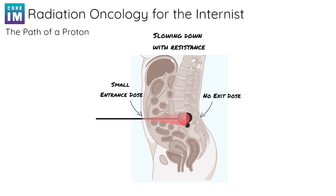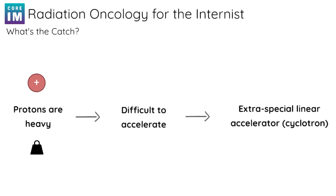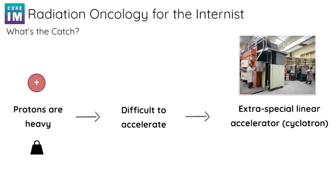Sounds great, doesn't it? So what's the catch? Protons are heavy — they have mass. All that mass makes protons tough to accelerate. In order to get these particles moving fast enough for radiation therapy, we need an extra special linear accelerator called a cyclotron. These cyclotrons are not common; there are only a few dozen in the United States, and their time is split between medical uses and particle research purposes. That means, for now, the use of protons is reserved for special circumstances — like brain tumors in children, or certain anatomies where you really do not want to harm the tissues nearby. If your patient has gotten proton radiation, know that they received a highly specialized treatment designed to minimize damage to nearby tissues, probably for a very important reason.